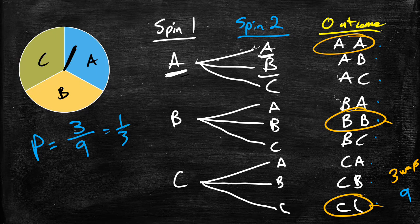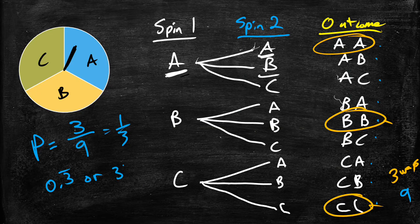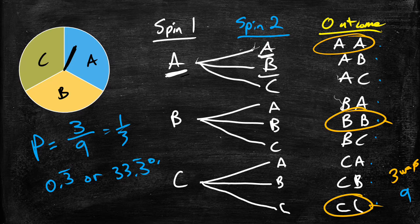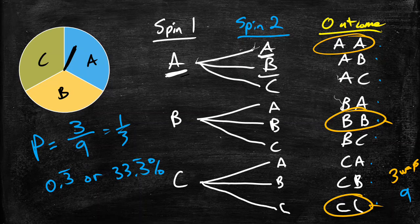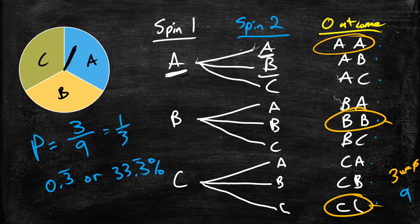Remember, I can turn my probability into a decimal. So one over three would be 0.3 repeating, or we could say it's 33.3 repeating percent. So what that means is that your probability of getting the same letter twice by doing two spins with this spinner is 33.3%.